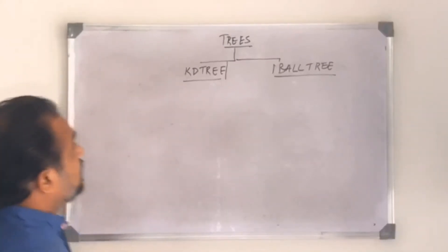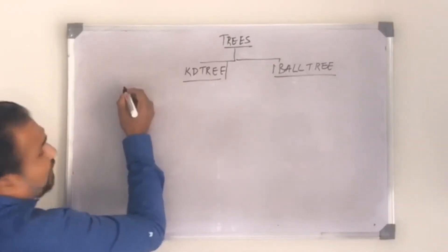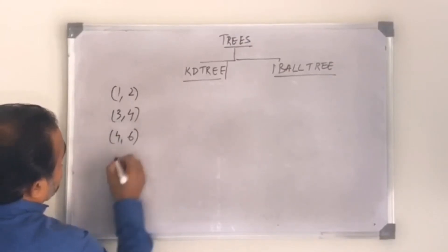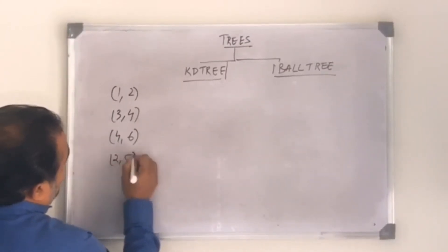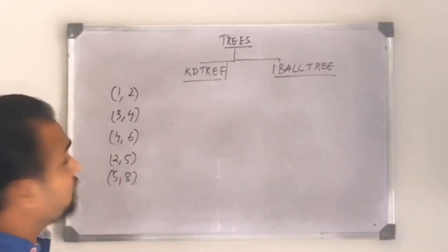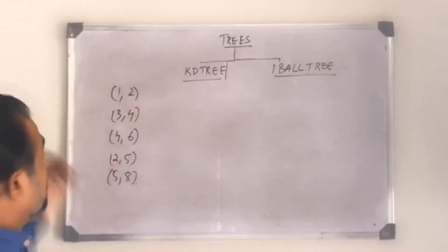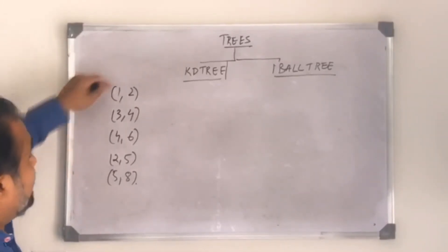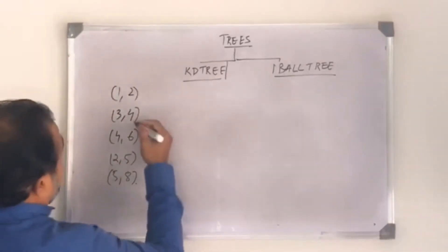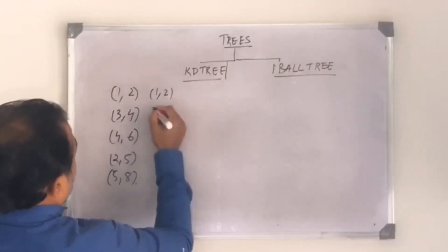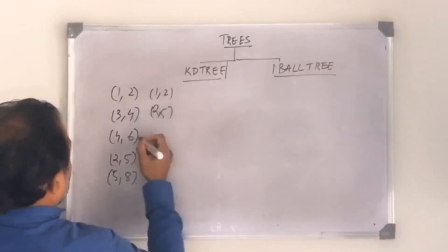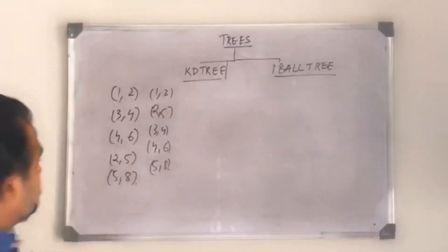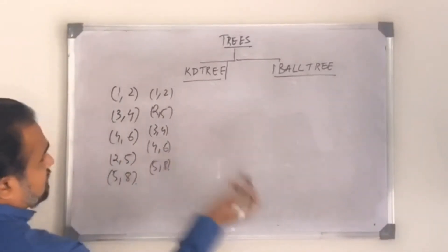To understand KD trees, let's take an example. Say you have these four coordinate points: (1,2), (2,5), (3,4), (4,6), and (5,8). These are your training data points and you want to fit a KD tree. What KD tree will do first is put the points in ascending order using X as the reference: 1, 2, 3, 4, 5. Now I need to figure out which is the middle point — the median — which is 3.